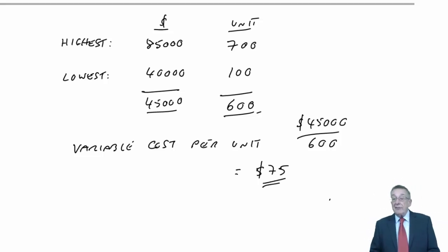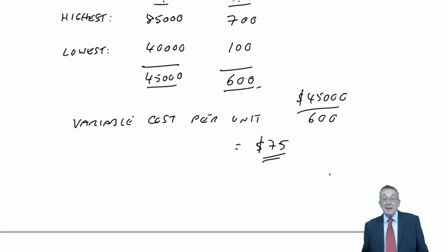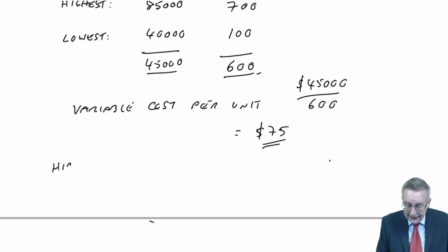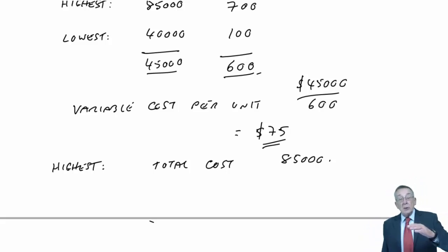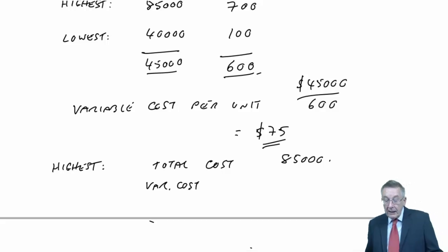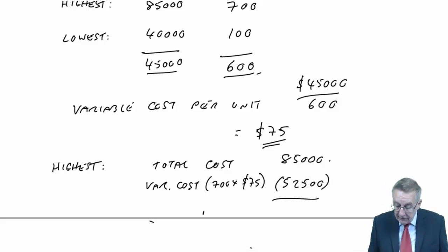So we now know the variable cost is $75. And having got the variable cost, now we can easily work out what the fixed cost per month is. If we look back at the highest one, we know what the total cost was, 85,000. That total cost is the total of the fixed cost plus the total variable cost. Well, the variable cost, now looking at the highest, we've done 700 units. Well, at 75 each, the total variable cost that month would have been $52,500. And therefore, the rest of that total of 85 must be the fixed cost per month. And what's it come to? $32,500.